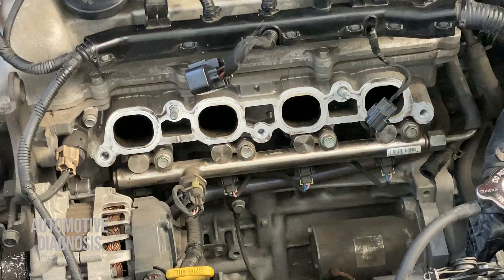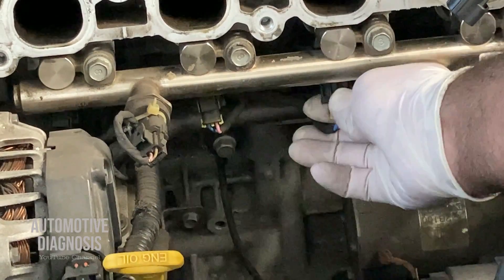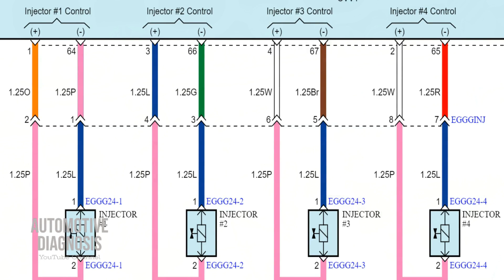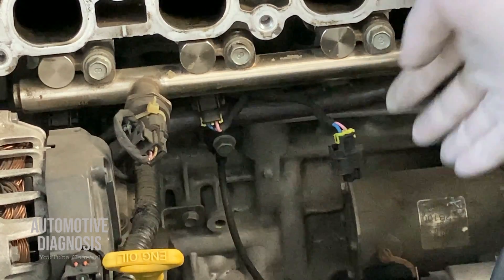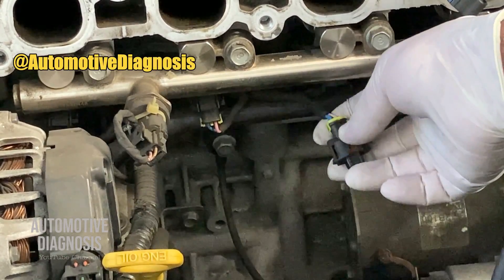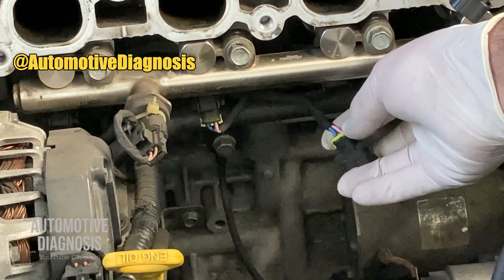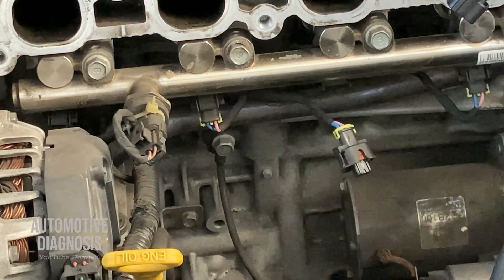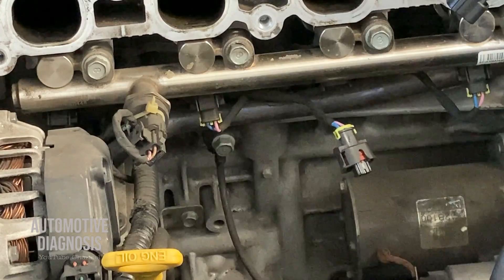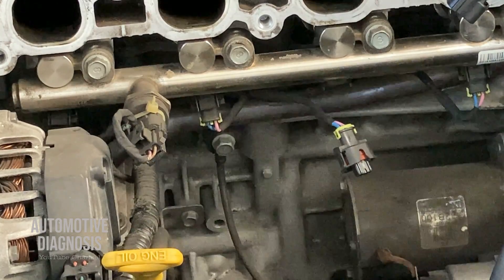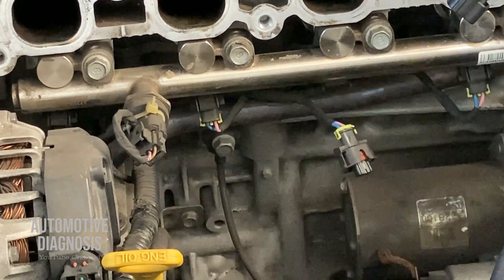On the fuel rail you can see the injectors. Disconnecting one injector connector, I have two wires — blue and pink — which matches exactly what the wiring diagram shows. On MPI injectors, one of these two wires comes from the fuse box providing power and the other is a control line. But on this GDI engine, both wires are connected directly to the ECM, and the ECM controls the GDI injectors directly. There is no power supply coming from the fuse box — it comes directly from the engine ECM.